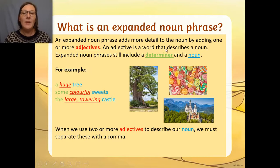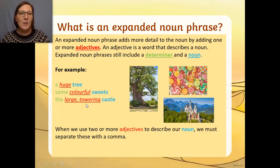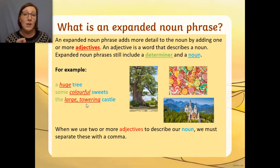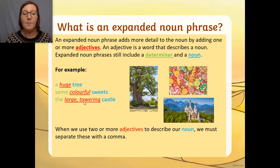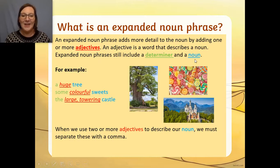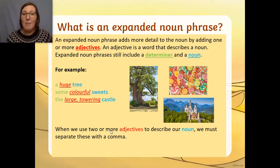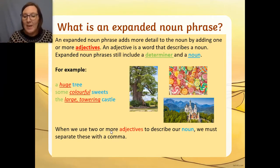And then my last example here. 'The' — determiner. 'Large, towering' — two adjectives. Now because we have two adjectives, do you remember when we talked about the success criteria? We must use a comma if we have two adjectives. Can you see that? So we always must use a comma between our two adjectives. 'The' is the determiner, 'large, towering' are the adjectives, 'castle' is our noun. So when we use two or more adjectives to describe our noun, we must separate them with a comma. Really important — try and remember that, jot it down on your worksheet, say it to yourself.